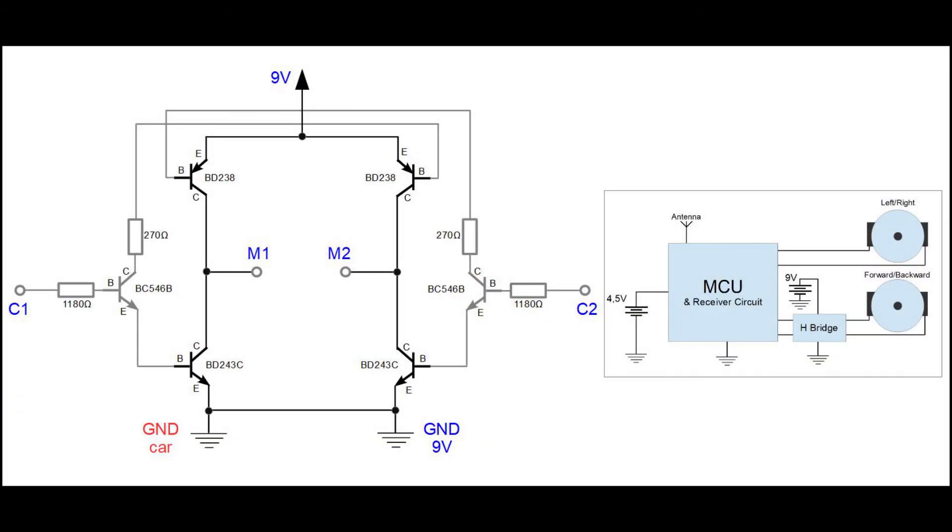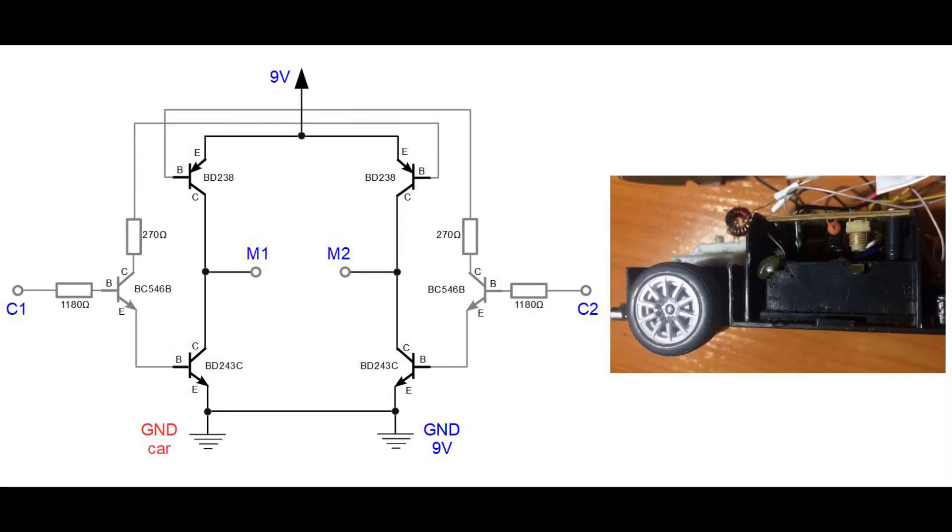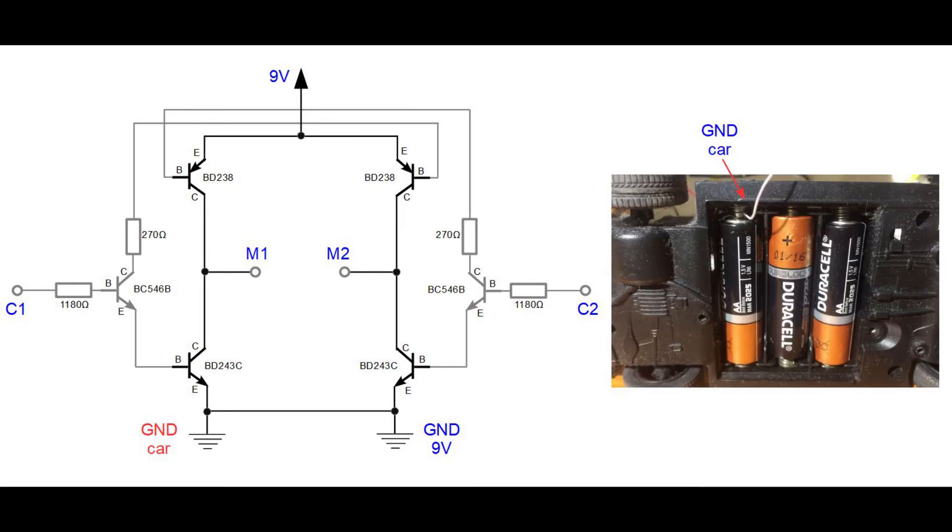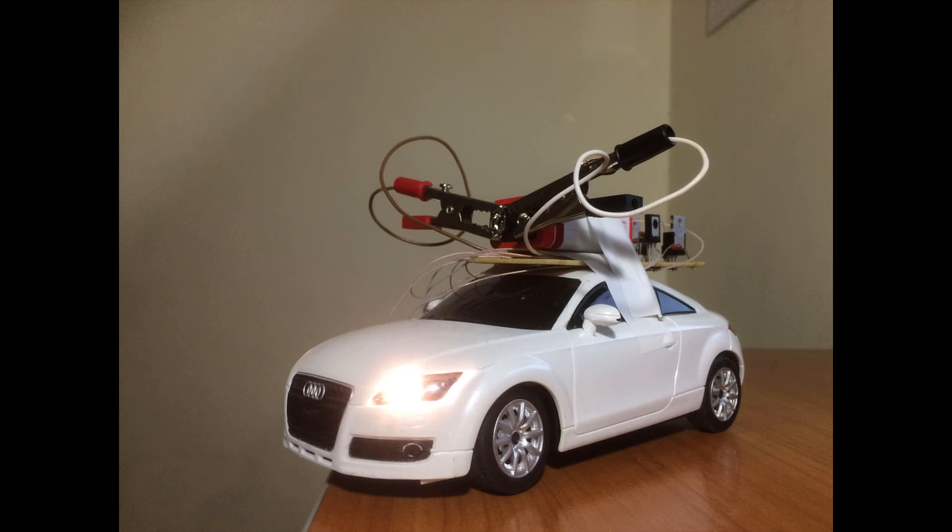The last thing that is left is the GND car wire, and this might be the most confusing one. This is simply the minus of the power source that your car originally has. If you look at your car, there should be a black wire coming from the battery compartment. You can either solder an extra wire there or simply connect the GND car wire to the spring that is holding the battery in place. When that's done, put your car back together and you should be ready to test it.